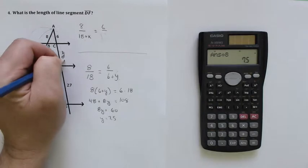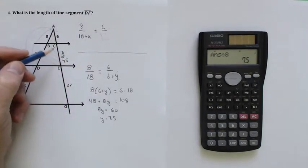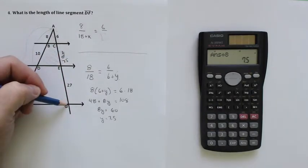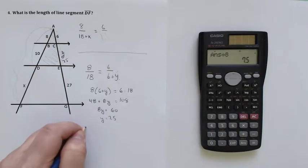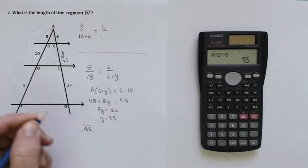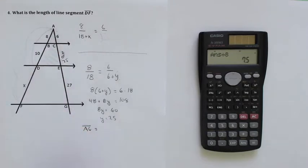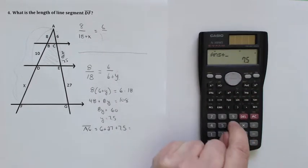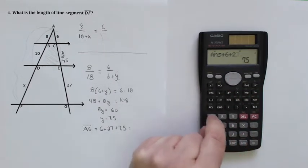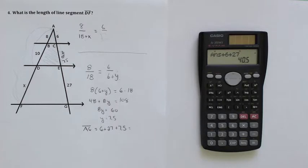So why did I bother? Well, because I know that's 7.5, now I know the length of that whole side, right? Side AG, the whole thing, is equal to 6 plus 27 plus 7.5 that I found. 6 plus 27 plus that 7.5 that I found, and that gives me 40.5.